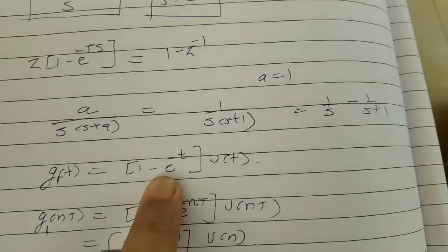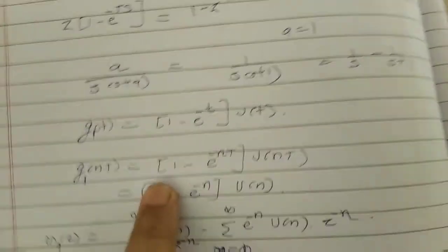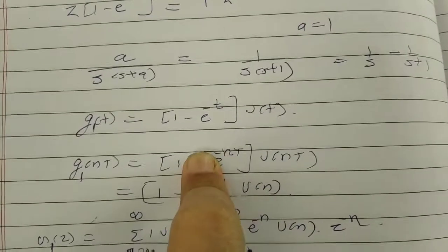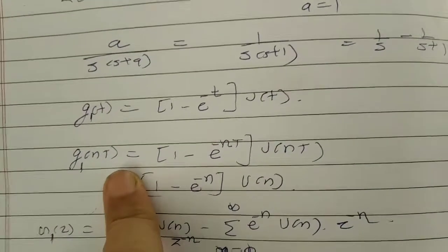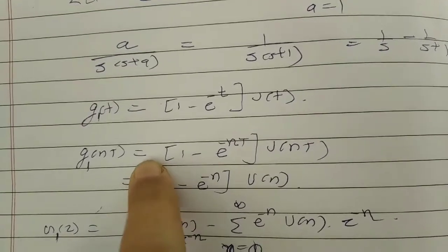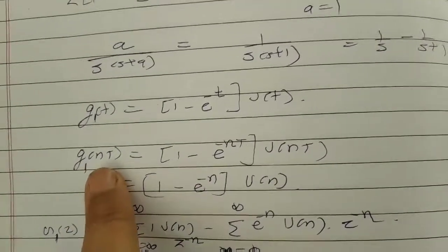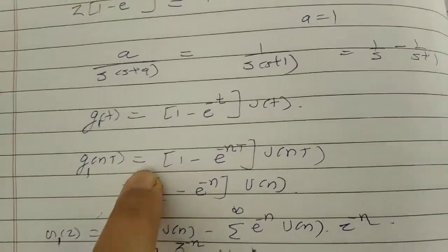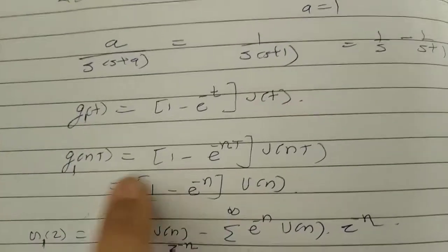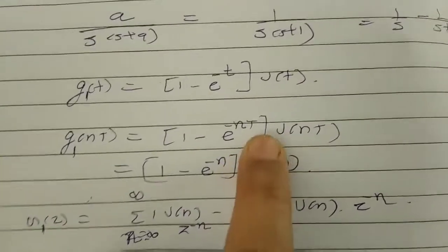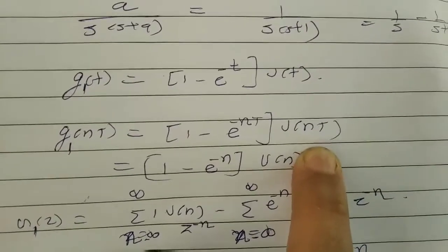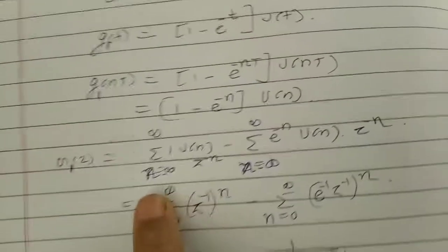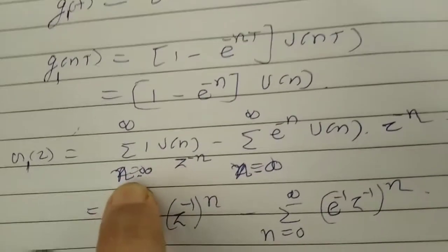The inverse Laplace transform of 1/s is u(t), and of 1/(s+1) is e raised to minus t times u(t). To obtain the Z-transform, this needs to be converted into a discrete signal. The discrete signal is obtained from the analog signal by replacing t with n times T, where T is the sampling time.